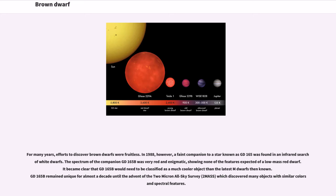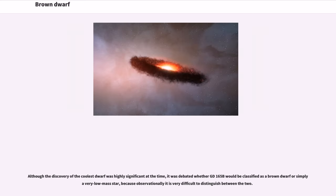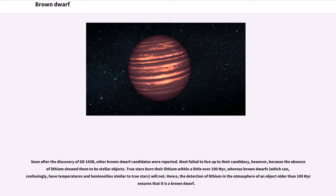GD 165B remained unique for almost a decade until the advent of the Two Micron All Sky Survey, which discovered many objects with similar colors and spectral features. Today GD 165B is recognized as the prototype of a class of objects now called L dwarfs. Soon after the discovery of GD 165B, other brown dwarf candidates were reported. Most failed to live up to their candidacy because the absence of lithium showed them to be stellar objects. True stars burn their lithium within a little over 100 million years, whereas brown dwarfs will not.